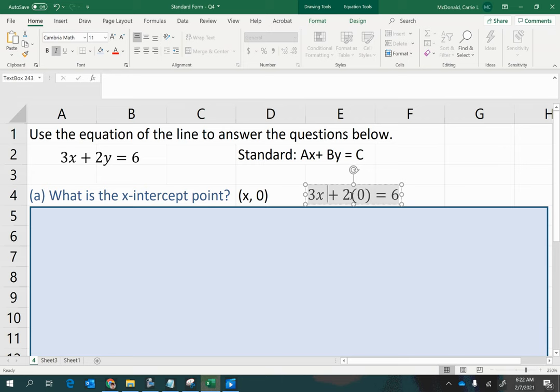So now, if I simplify this, this 2 times 0 just becomes 0, and then 3x plus 0 is still 3x. So we have a nice simple form of this here, which if you divide both sides of this by 3, then you get x equals 6 divided by 3 is 2.